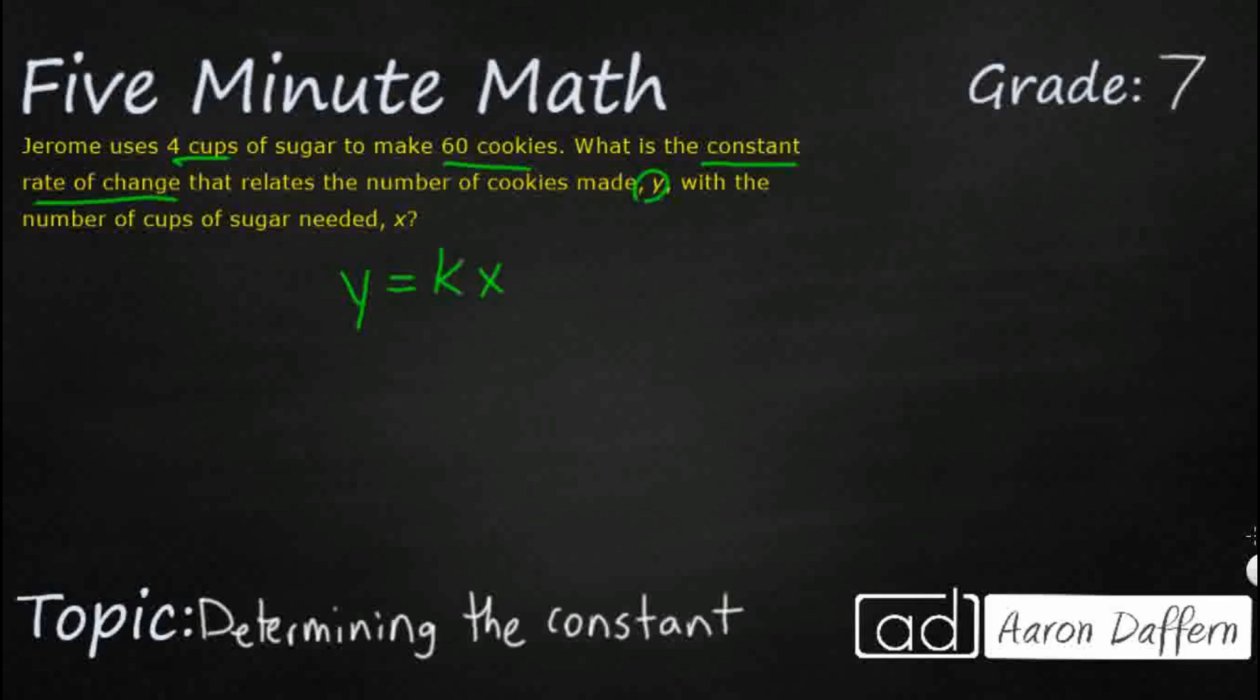So the number of cookies is y, 60. Let's just go ahead and keep that k. The number of cups of sugar needed, that is 4. So let's just go ahead and put that x. Let's flip it around—4k rather than k times 4.